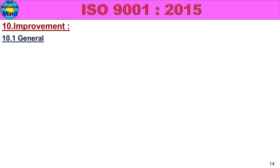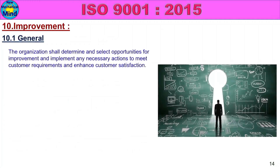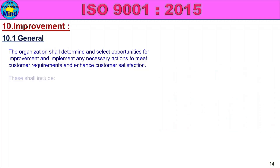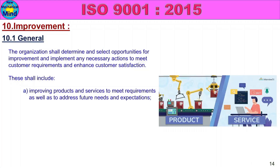Class 10, Improvement. 10.1 General. The organization shall determine and select opportunities for improvement and implement any necessary actions to meet customer requirements and enhance customer satisfaction. In the process, opportunities for improvement, and customer requirements and customer satisfaction increase. These include improving products and services to meet requirements, as well as to address future needs and expectations.